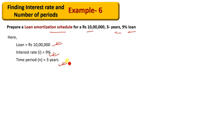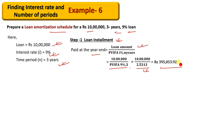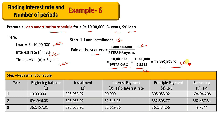Step number one is the loan installment. The loan amount, with PVA interest factor at 5% over 9 years, is 2.5313. This gives a loan installment of $3,955.92. This is step number one. This is the start of year beginning amount.